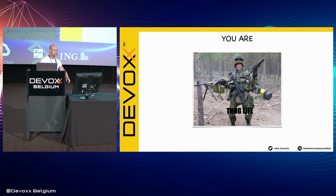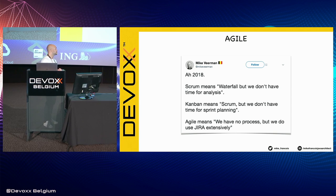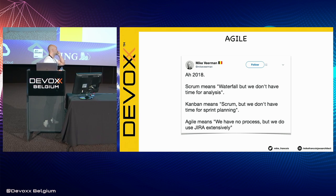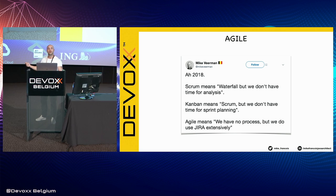There are also customers who say they don't have much time, but they can do something else they've seen at conferences — agile. Mike Vermann tweeted something very interesting that I have seen in many companies: 'Scrum is a waterfall but we don't have time for analysis. Kanban is a Scrum but we don't have time for sprint planning. And agile means we have no process, but we do use Jira extensively.' I swear this is true. I have seen customers with product owners, Scrum masters, post-its everywhere — but they do not leave time for analysis or to build a clear roadmap.